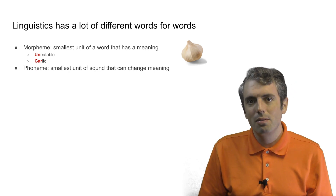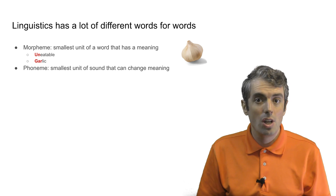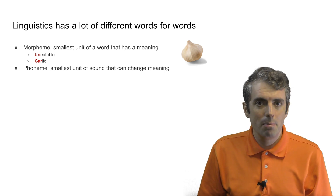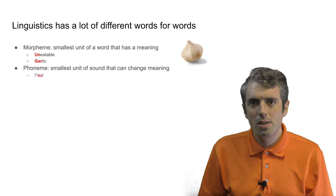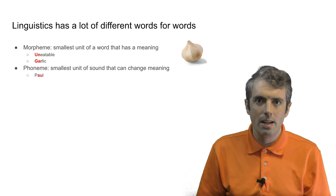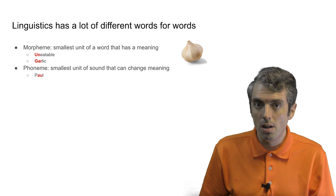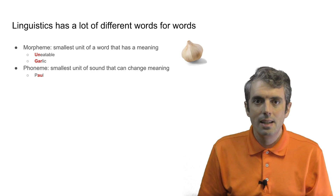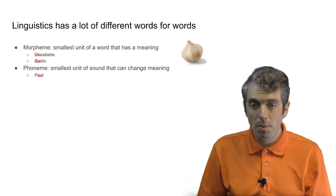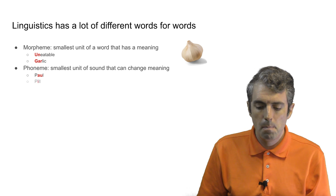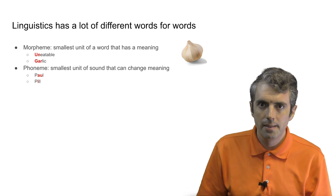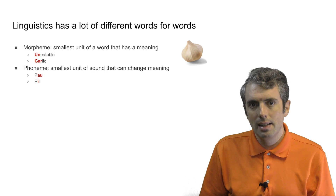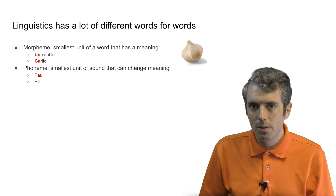Let's now take a look at phonemes. A phoneme is the smallest unit of a word that can change the meaning of a word. For example, if you change the "aw" sound in the name Paul to "i," it changes the meaning — Paul becomes pill. As you can see, there isn't a one-to-one correspondence between letters and phonemes.